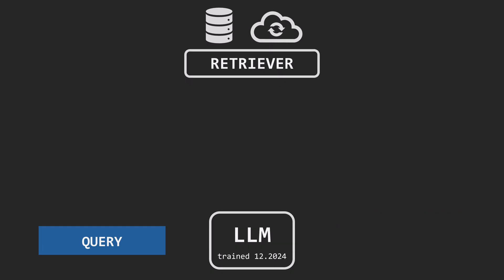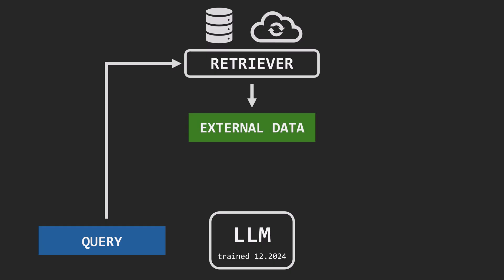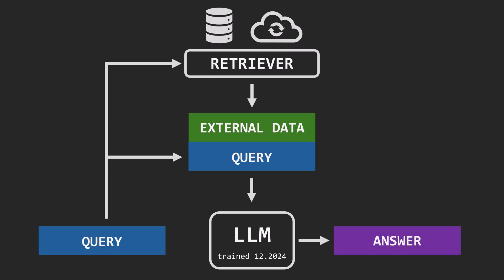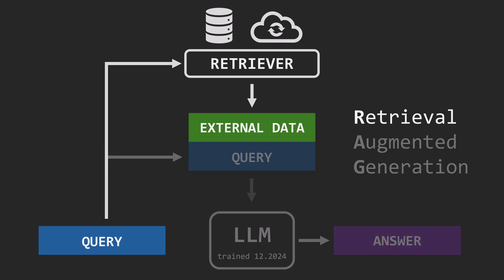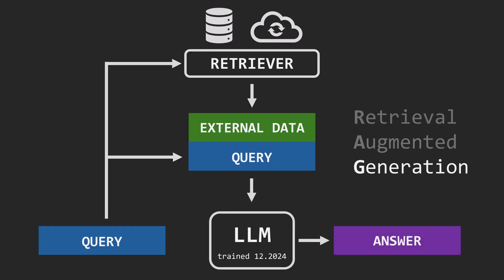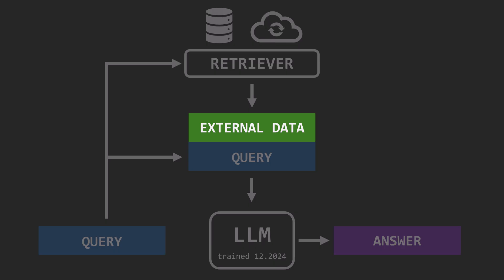Here's how it works. Instead of sending your query straight to the model, the query is first passed to the retriever. The retriever searches an external database or even the internet for relevant chunks of information. These are then combined with the original query and sent to the language model, which generates the final answer. This allows even an older model to respond with current or specialized information. That's why it's called Retrieval Augmented Generation — we first retrieve relevant information, augment the original query with it, and then generate an answer. The external retrieved data is commonly referred to as context.